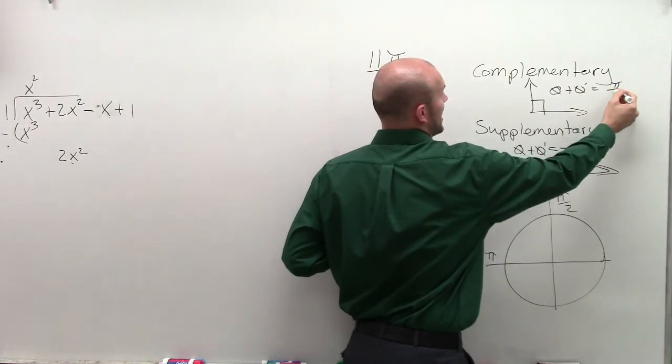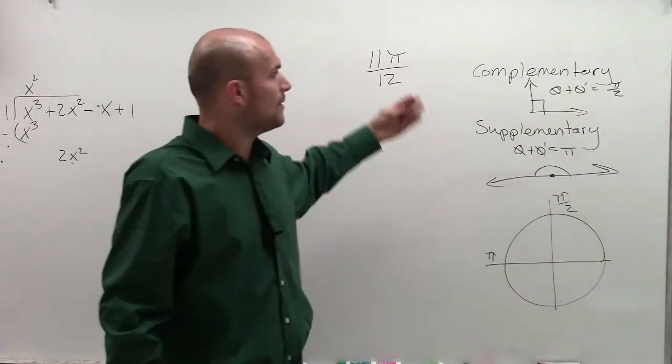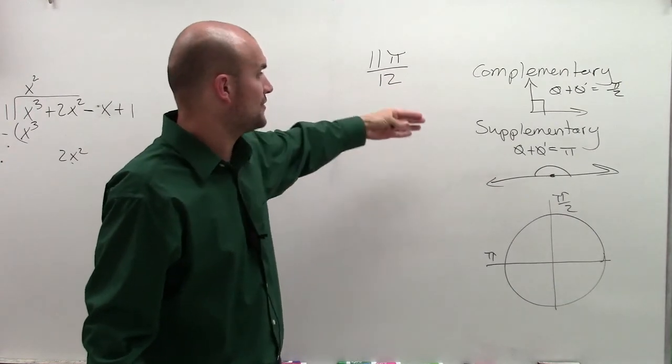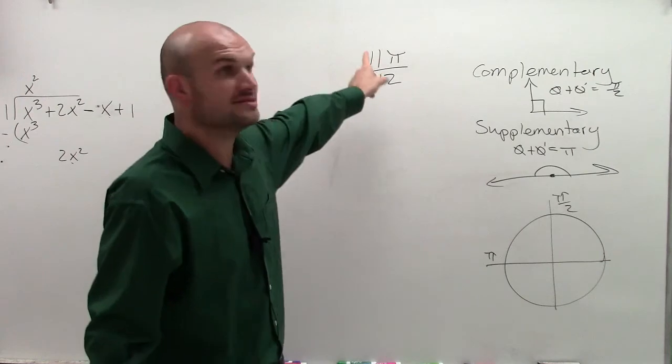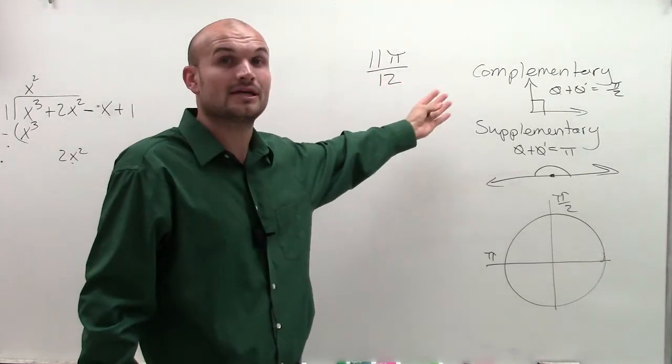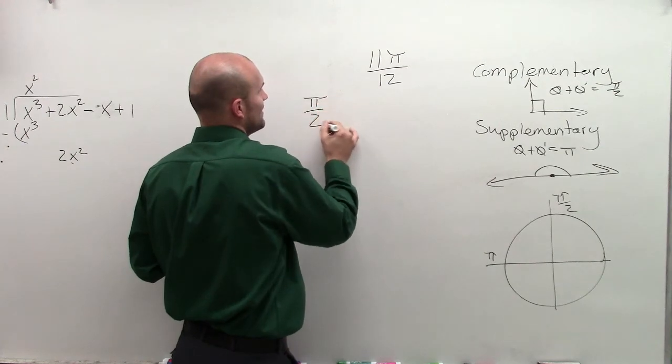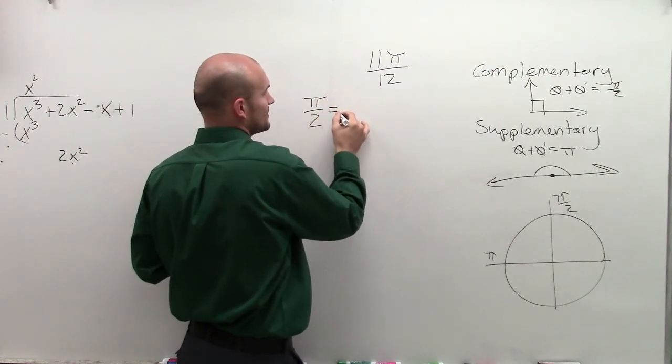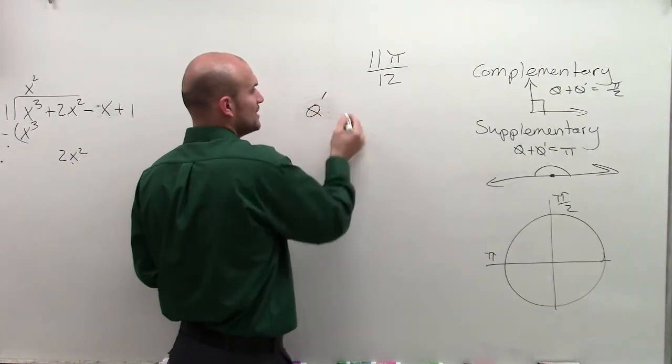So now if I give you an angle here, and I want to explain to you how to find the complementary and supplementary angles, that means this angle plus my supplementary angle equals pi, or equals pi over 2. Or I could just say pi divided by 2 equals theta prime, which is going to be my complementary angle,